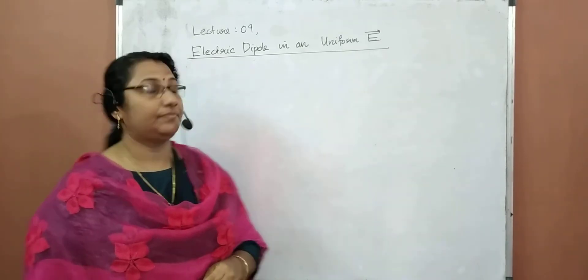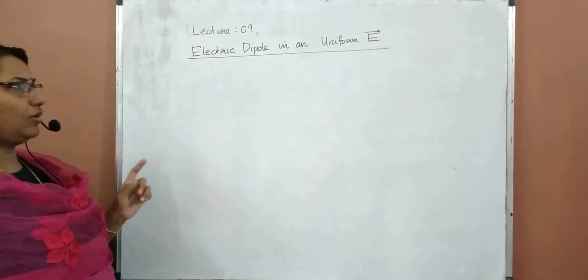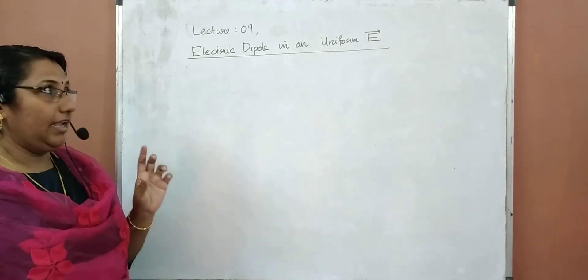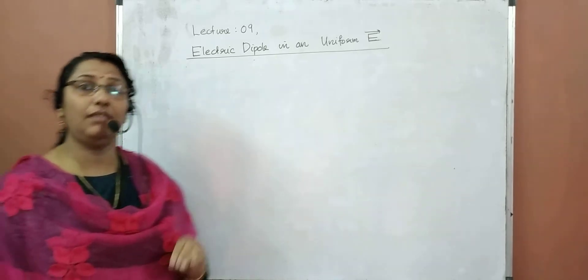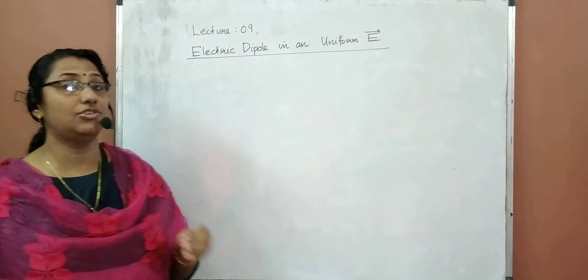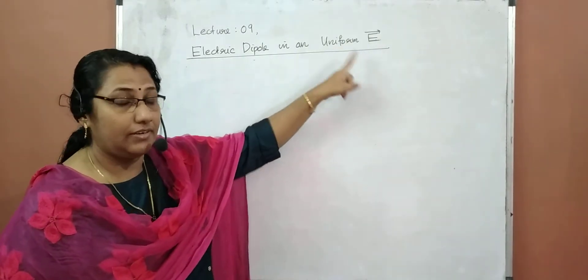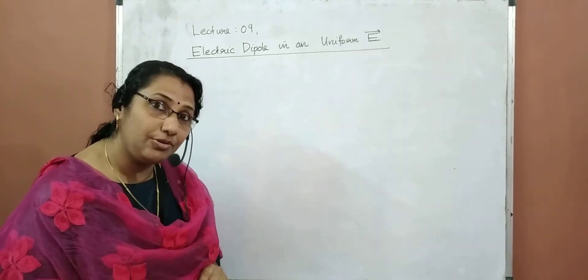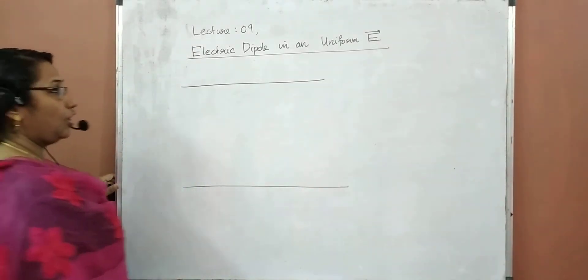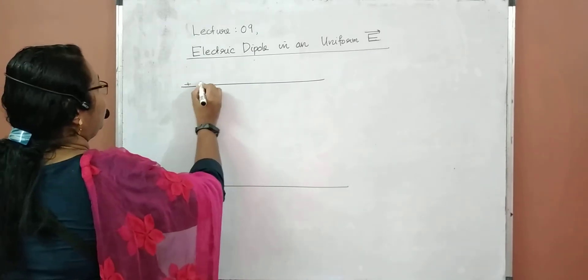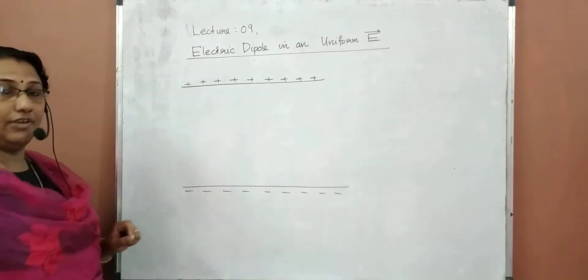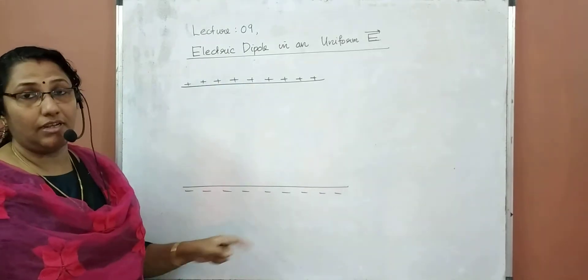So, what is a uniform electric field? It is a region where each and every point will have the same magnitude and direction for the electric field. And where is this uniform electric field obtained? As studied earlier, uniform electric field is always obtained in between two parallel, equally and oppositely charged plates.